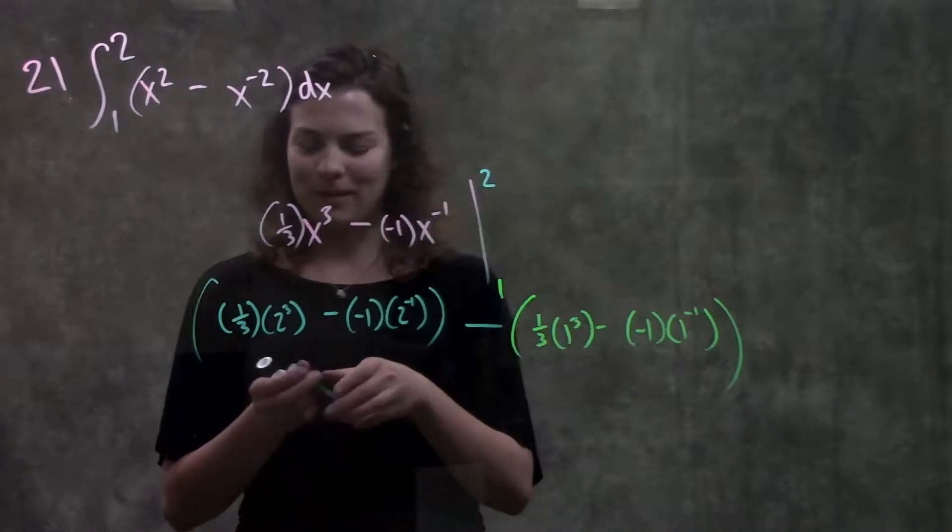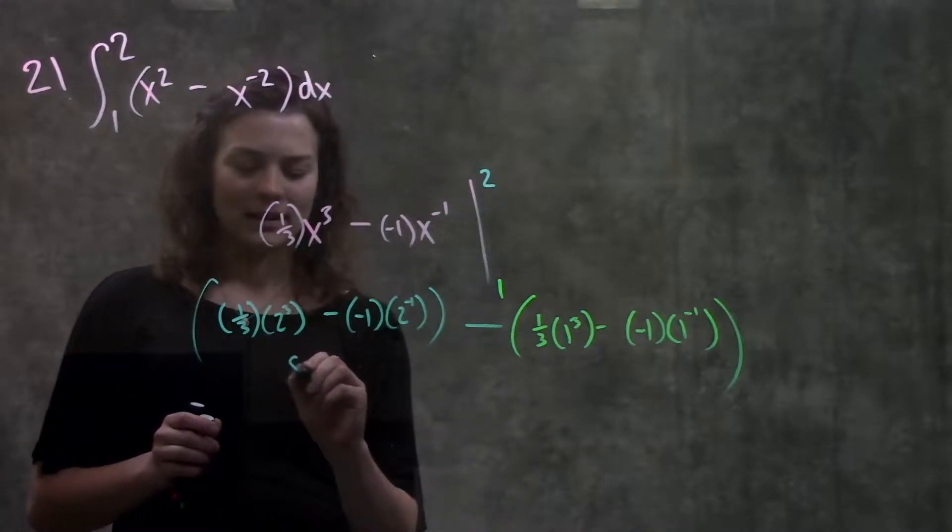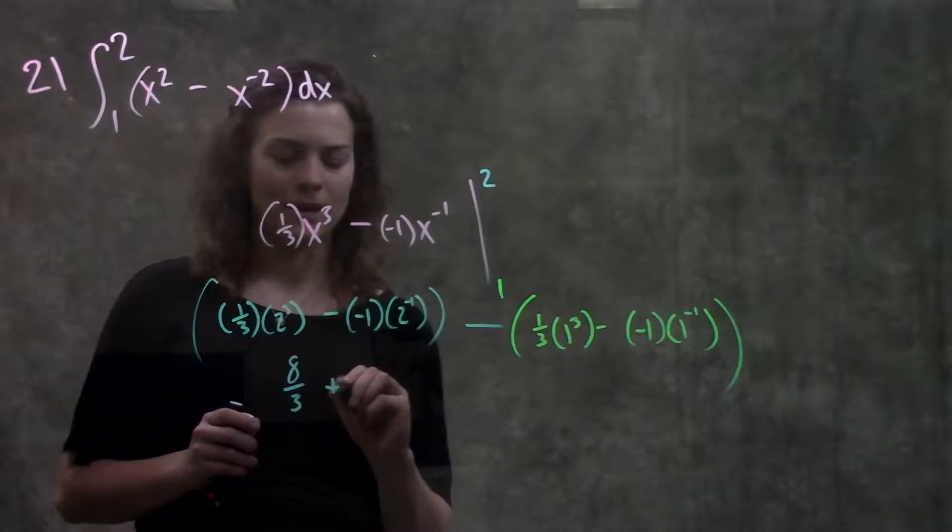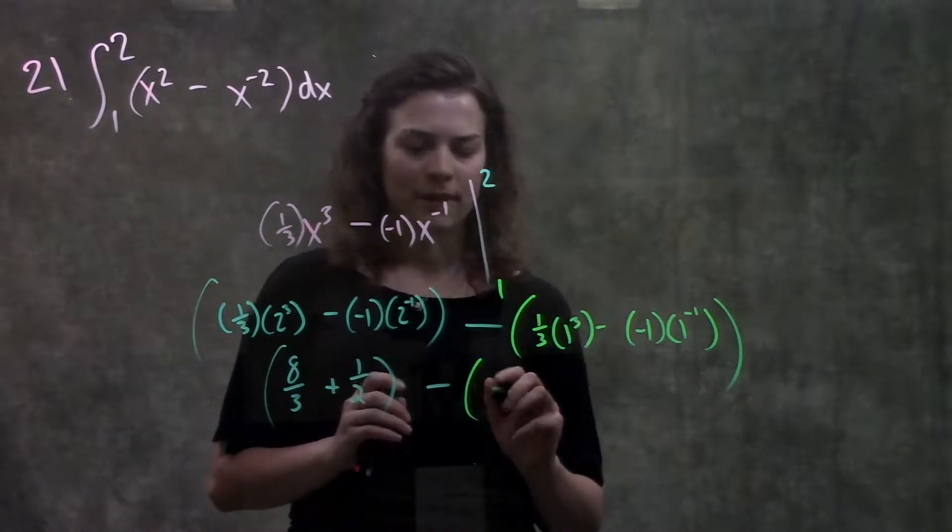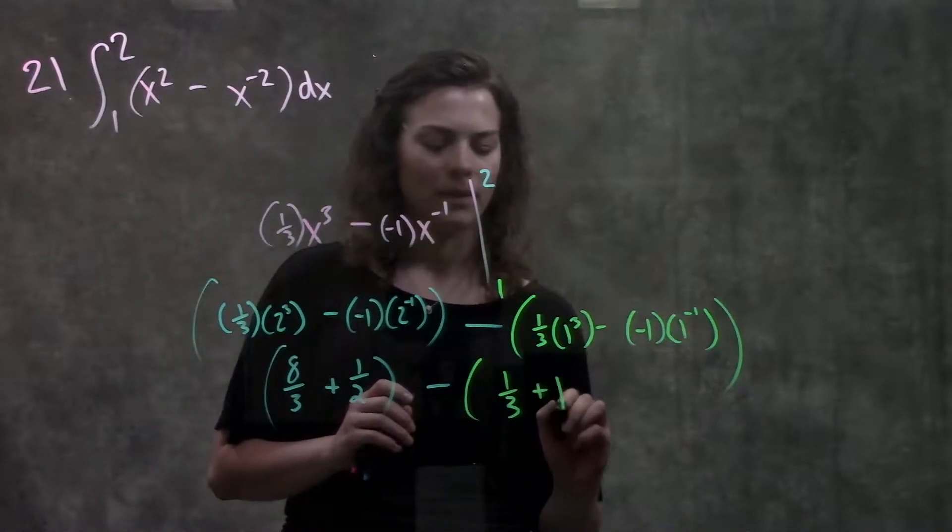Okay, simplifying this out a little bit, over here I get 8 over 3 plus 1 half, all of this, minus, on this side, this simplifies out to 1 over 3 plus 1.